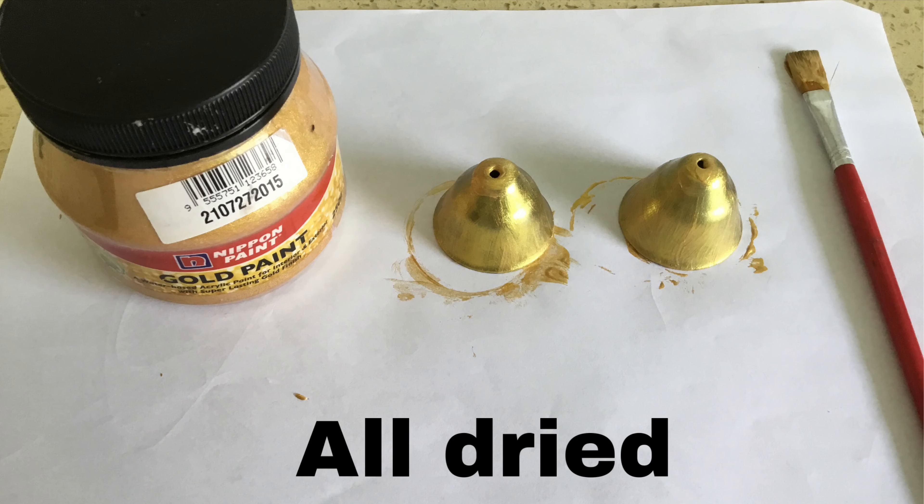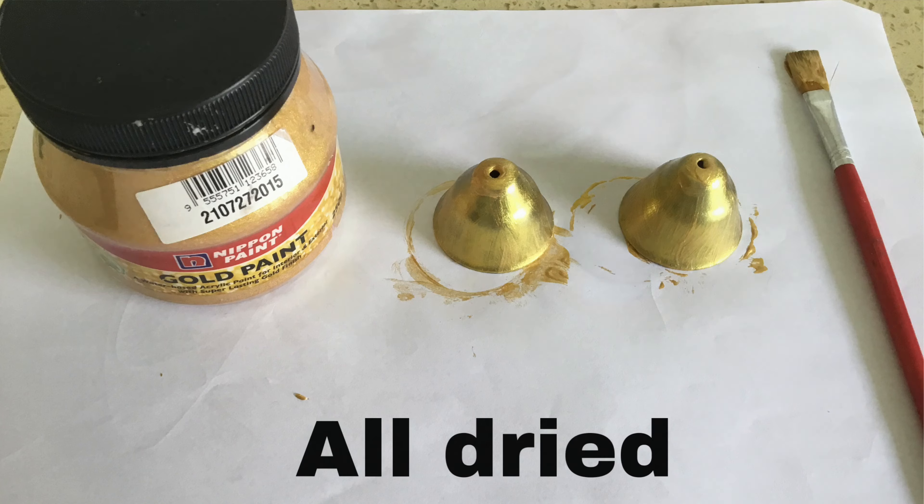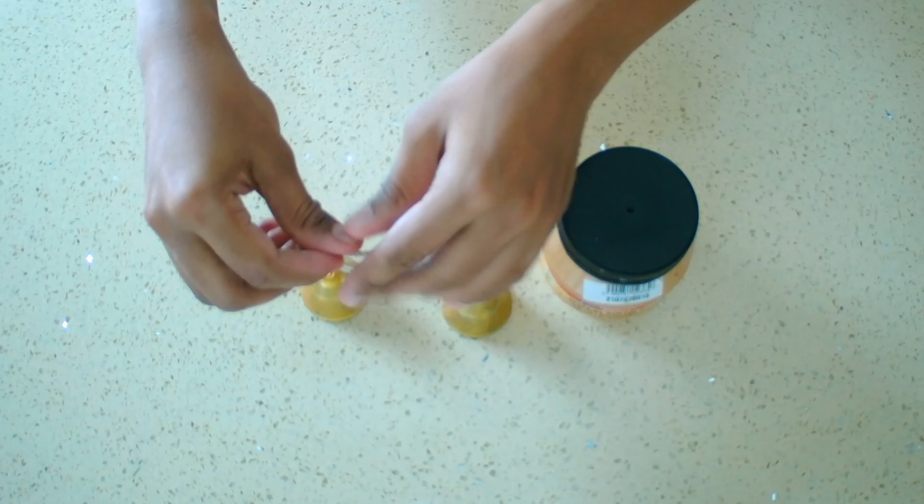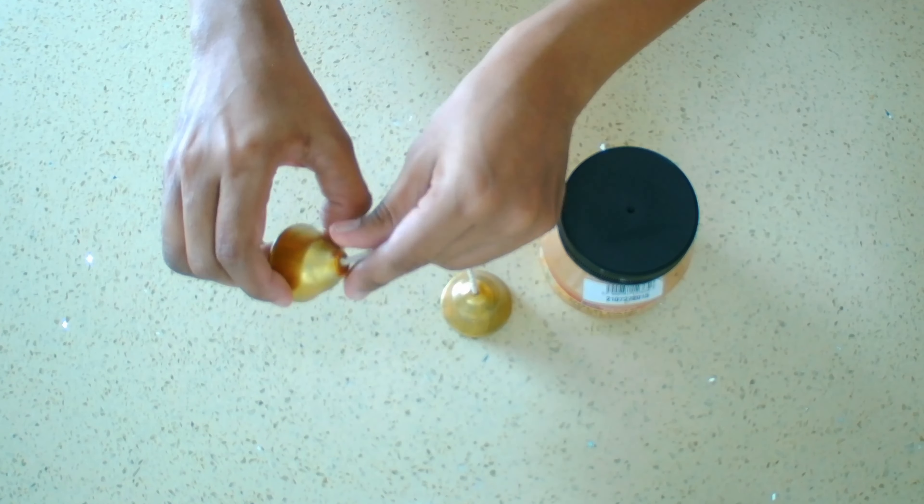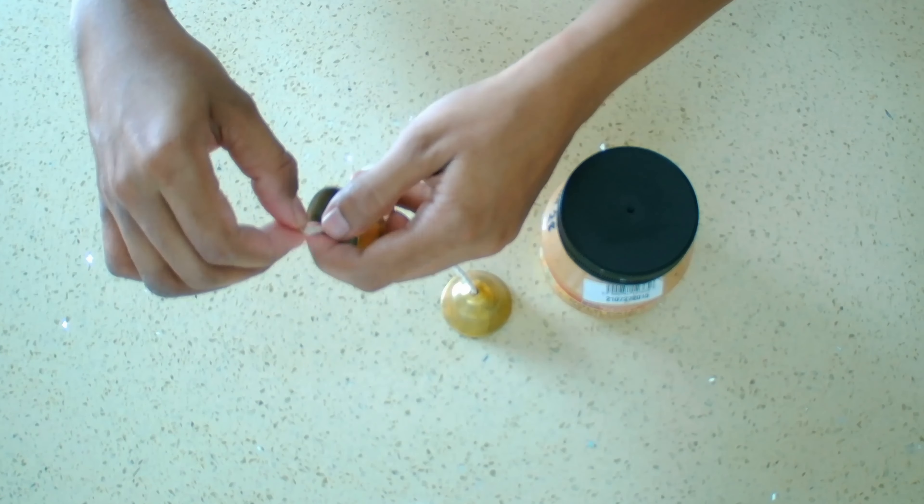I gave it another 5 minutes because it had some sticky thing. So this is how it looks like after fully dry. So now I am going to fix my string into the bells. So tie a knot in two sides.